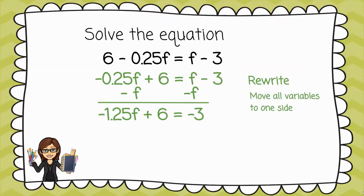Now, we can begin to solve. So, I'm going to do the opposite of adding 6, which is to subtract 6 from both sides. That leaves me with negative 1.25f equals negative 9.